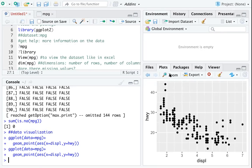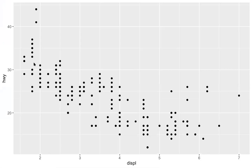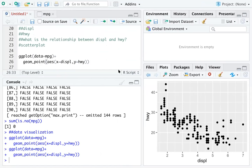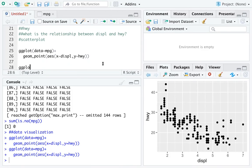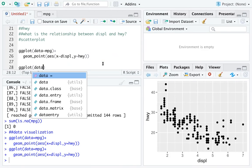From this graph, you can see we do have a linear trend, but we also have some dots that are kind of outliers — two on the very top and a few on the middle right side.